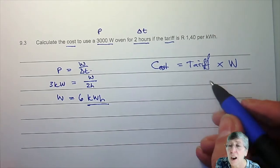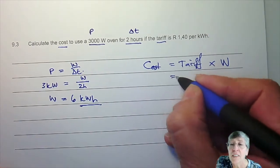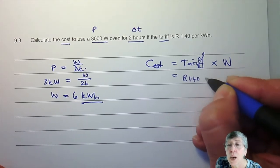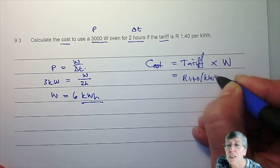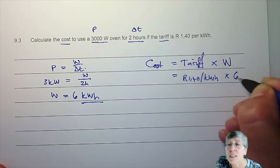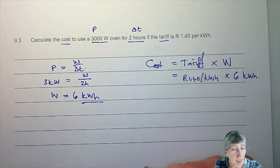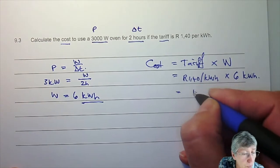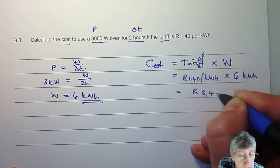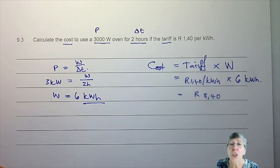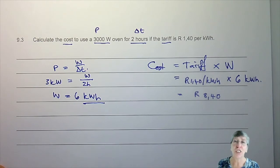We're working towards kilowatt hours, not joules. The tariff is one rand forty per kilowatt hour, times six kilowatt hours used, and you end up with eight rand forty. That doesn't sound much, but remember you've got a lot of different appliances in your house, all adding to your bill.